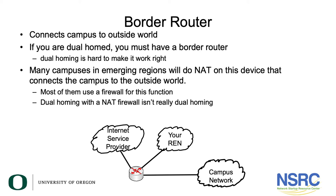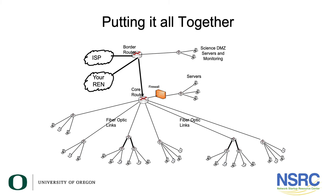So they cannot attack anything inside your campus network without a machine on campus initiating an outbound connection to the attacker. Let's put this all together: we have a border router that connects to the ISP and your REN, a Science DMZ, NAT functions, and it connects to your core router. The core router serves a firewall addressing your servers, and the core router also drives fiber optic cabling to each of your buildings.